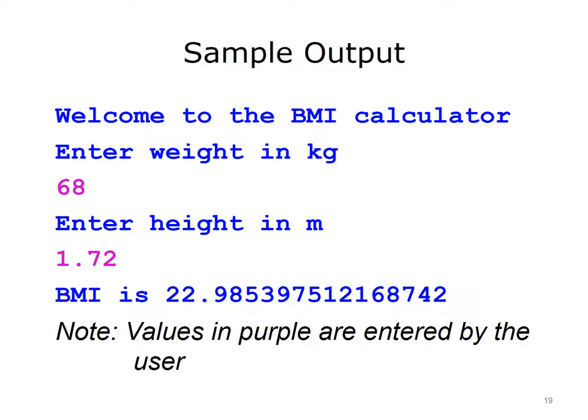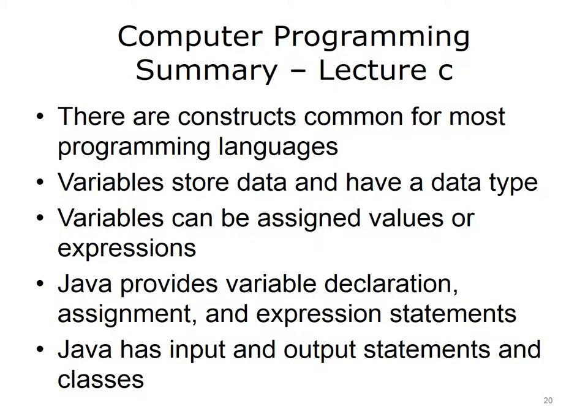Here is a sample output from running the program. The statement Welcome to the BMI calculator is output. Then the screen prompts the user to enter their weight in kilograms — in this case, the user enters 68. All values shown in purple are user-entered values. Next, it prompts the user to enter the height in meters; the user enters 1.72. Finally, after calculating the BMI, the program outputs it — in this case it is 22.985 and so on. Some more formatting would be necessary to output the decimal value with only 2 or 3 decimal places, but that is not necessary for this example. Feel free to go back to the previous slides to review the code, comparing it with what the computer outputs. It is valuable to understand the basics of variables, data types, declarations, assignment statements, and input and output statements. This concludes Lecture C of Computer Programming.